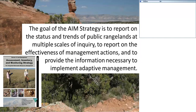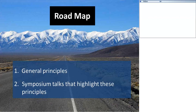The goal of the Assessment, Inventory, and Monitoring strategy — and I'd argue the role of information in land management — is to really enable this learning step to occur. The AIM strategy is a document published in 2011. The goal of the AIM strategy is to report on the status and trends of public rangelands at multiple scales, to report on the effectiveness of management actions, and to provide information necessary to implement adaptive management. I'll talk about the principles of AIM, which are general principles applicable to monitoring in many situations on rangelands and beyond.